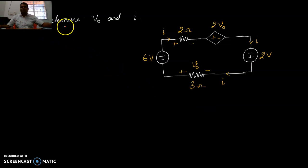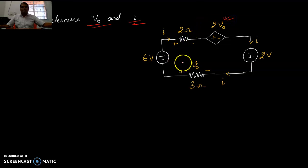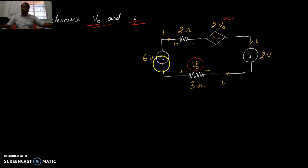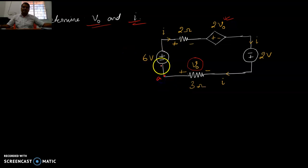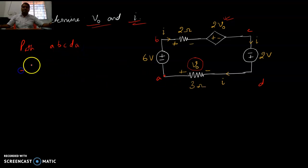Another problem: determine V0 and I. This circuit has an independent source and a dependent source 2V0. Since V0 appears in the circuit, apply KVL moving in this direction through points A, B, C, D, and A. Give the current direction as clockwise first, then move along the path.